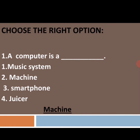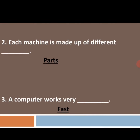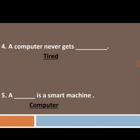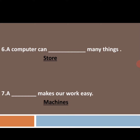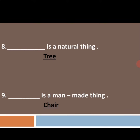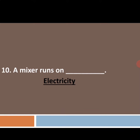Let's see once again: first, a computer is a machine. Second, each machine is made up of different parts. Third, a computer works very fast. Fourth, a computer never gets tired. Fifth, a computer is a smart machine. Sixth, a computer can store many things. Seventh, a machine makes our work easy. Eighth, tree is a natural thing. Ninth, chair is a man-made thing, and a mixer runs on electricity.